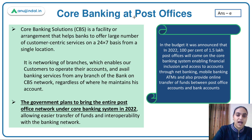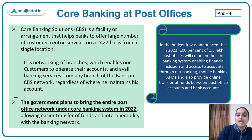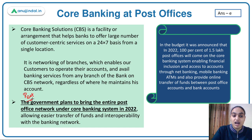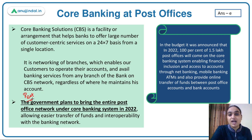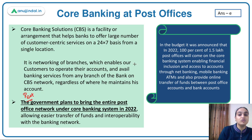The government has planned that the post office network will also be brought under the core banking system to ensure easier fund transfers and interoperability. In the budget, it was announced that in 2022, 100% of 1.5 lakh post offices will come under CBS. This means people with post office accounts can also access net banking, mobile banking, ATMs, and transfer funds between post office accounts and bank accounts.